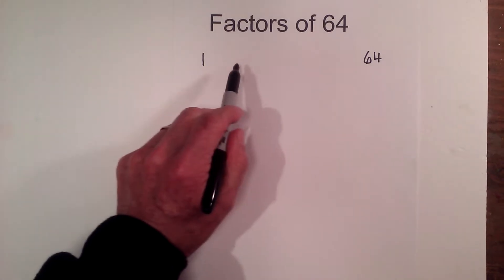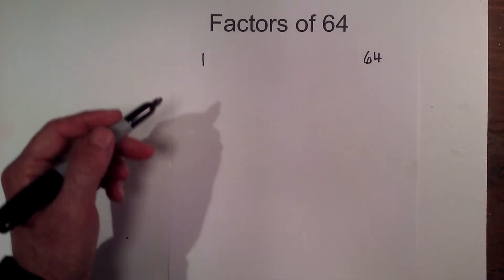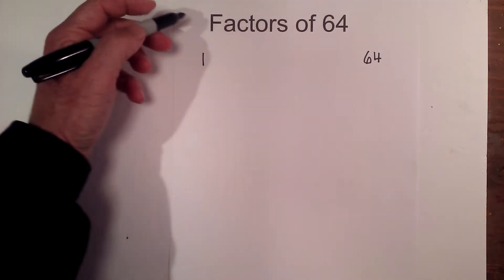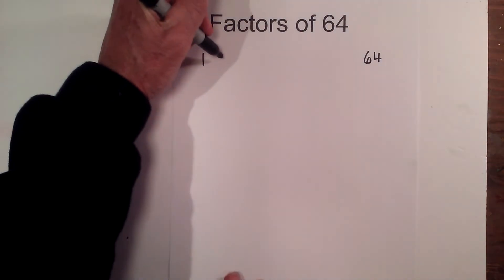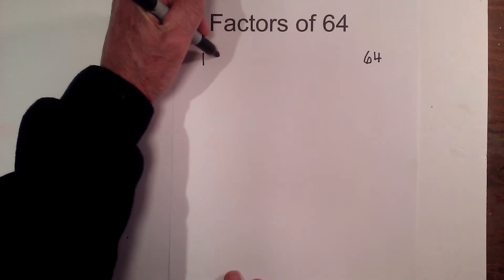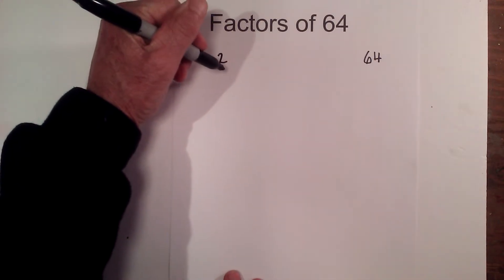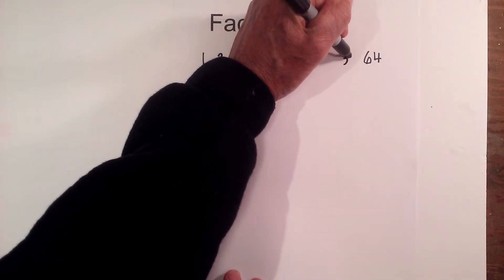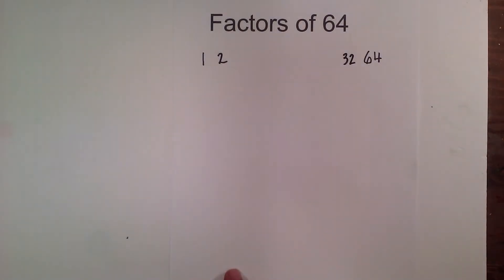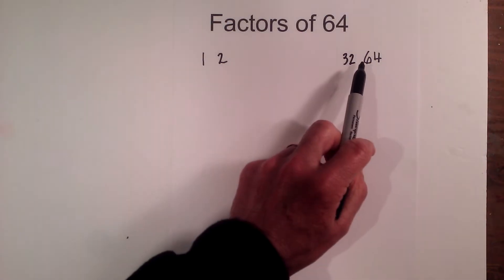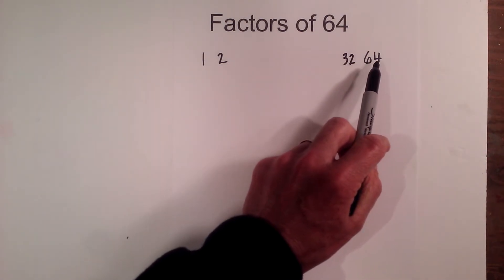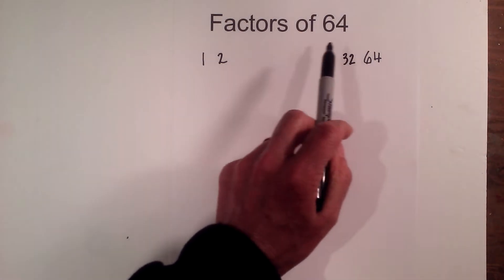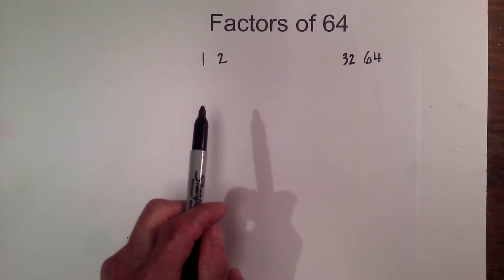Let's begin with 2. Does 2 go into 64? Yes — I know because it ends in an even number, so 2 times 32 is 64. Next is 3. If I add the digits together, 6 plus 4 is 10, which is not divisible by 3, so 3 will not go into it.